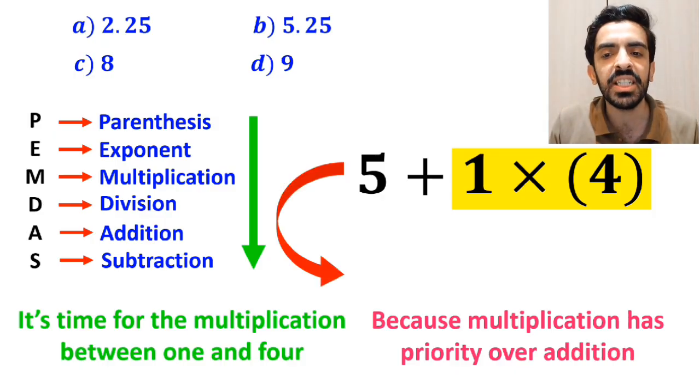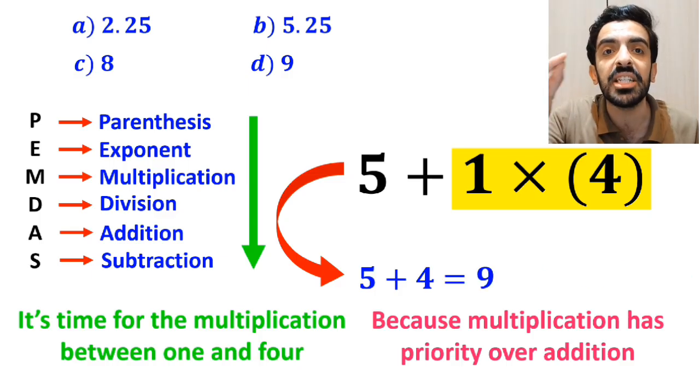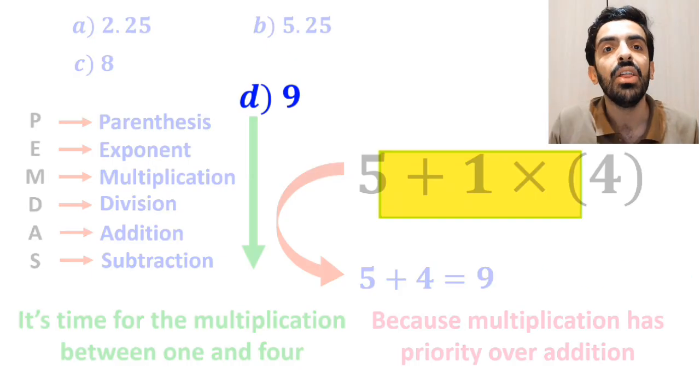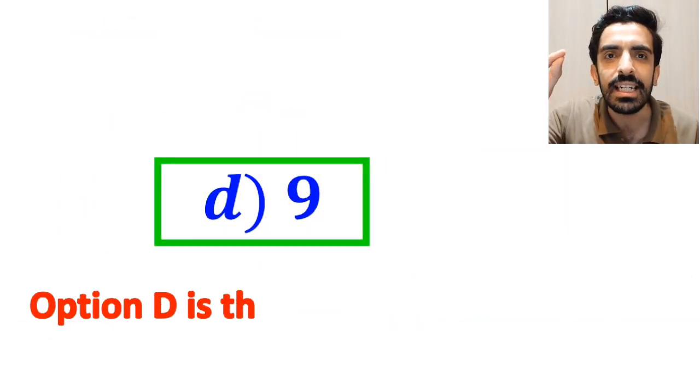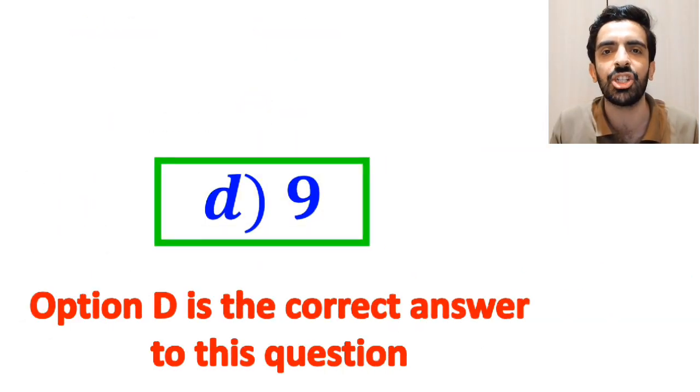So, instead of this expression, we can write 5 plus 4, which ultimately gives us the answer 9. Therefore, option D is the correct answer to this question. I'll see you next time.